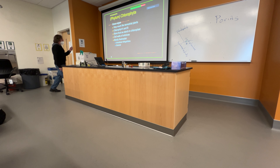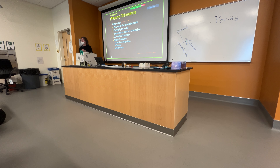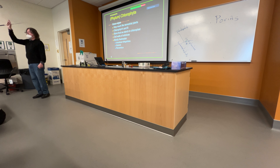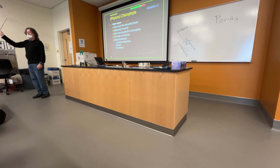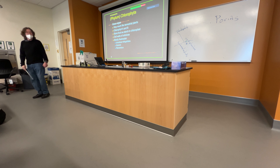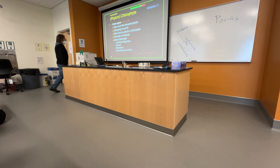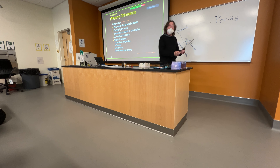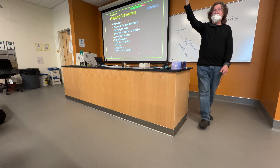Then there are filamentous forms like Spirogyra and Ulothrix. This is where the cells are still not multicellular — each individual cell is responsible for all aspects of life. But there are some that are multicellular. So we've seen multicellularity evolve at least three times in eukaryotes: brown algae, red algae, and some green algae — independently of each other, not inherited from a common ancestor.